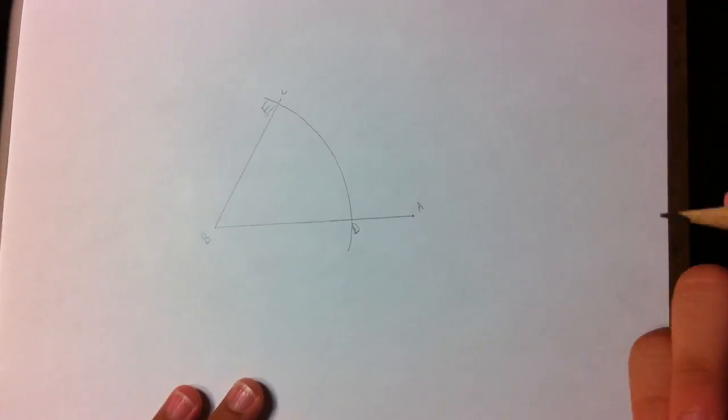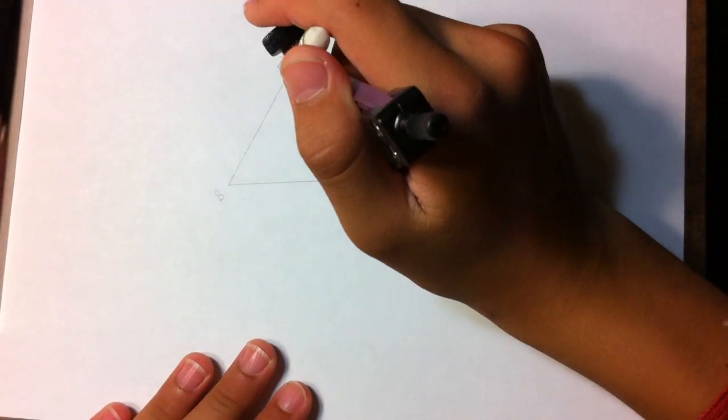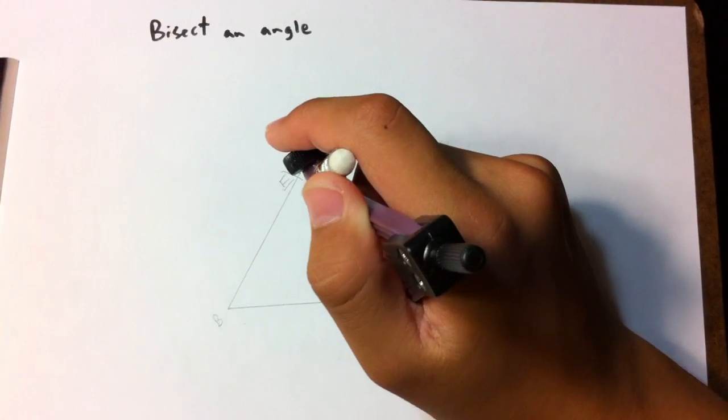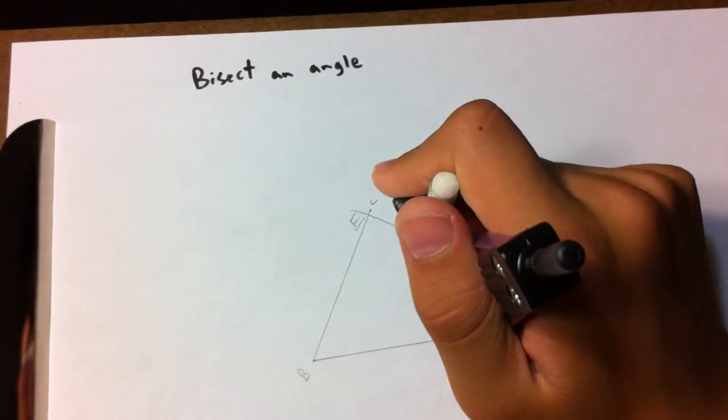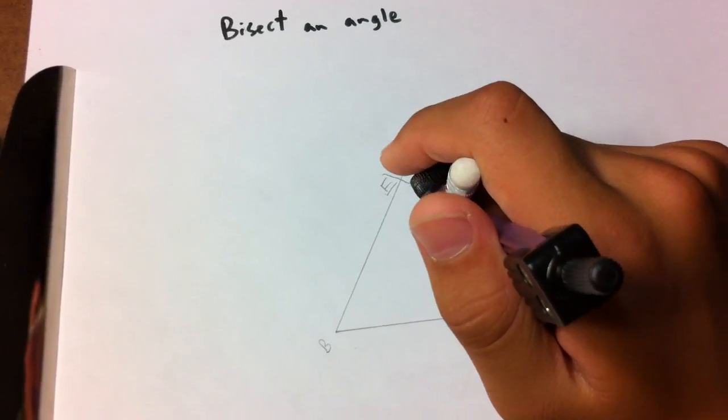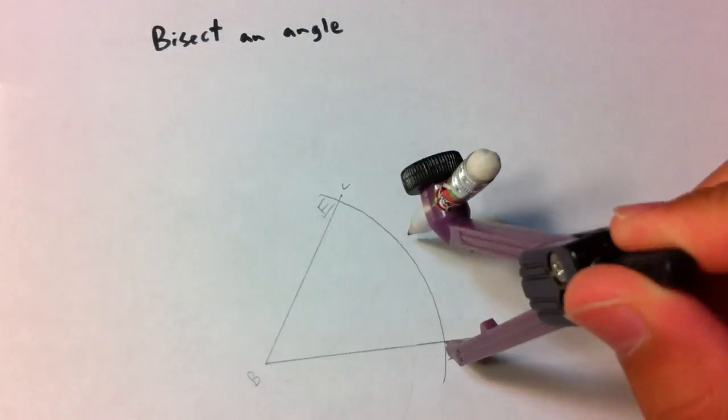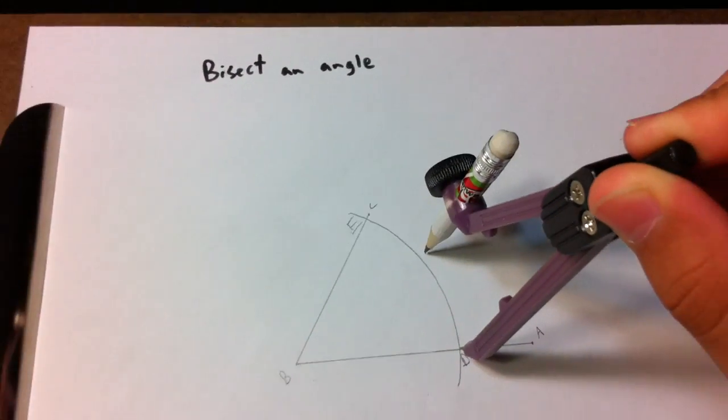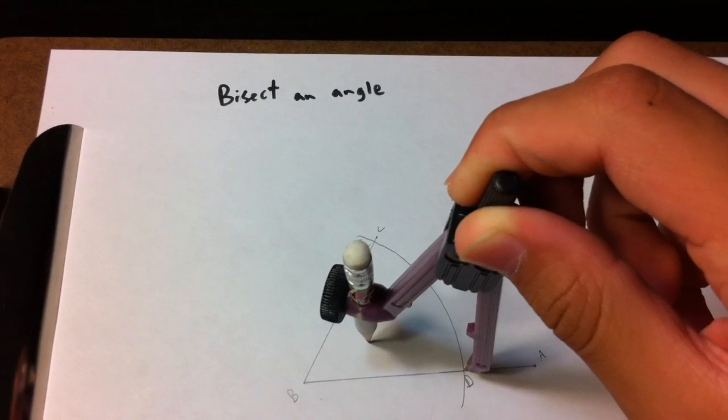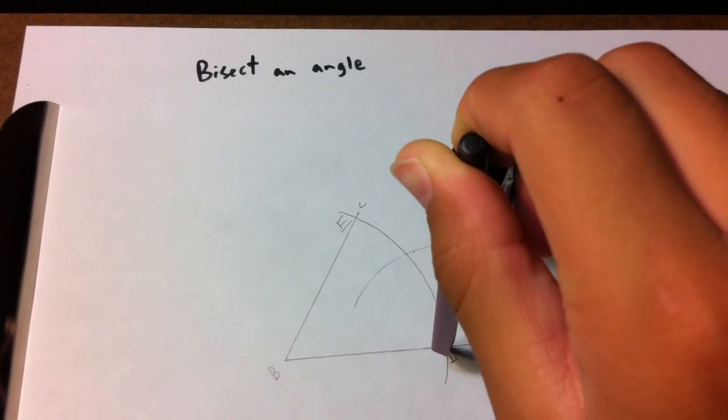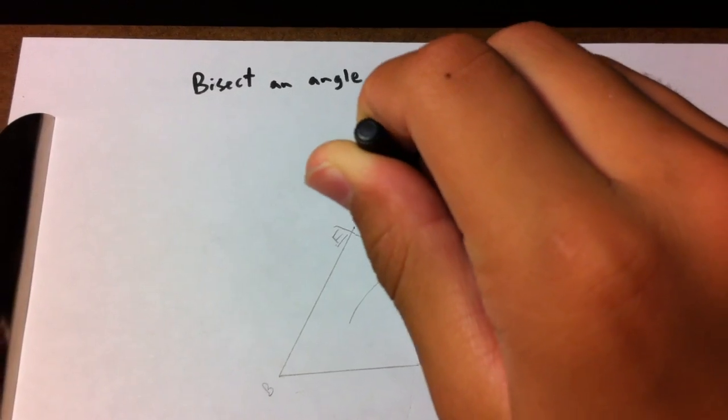Then you just kind of put your compass on D. Put your compass on D, that's good. And then you draw a little arc there again, keeping sure it's more than halfway between of ED.